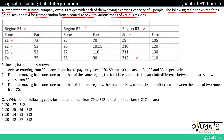The fare to go from Z0 to Z1 will be 72, and Z0 to Z2 will be 53. We have some more information given. First, any car entering from Z0 to any region has to pay entry fees of 50, 80, and 100 dollars for R1, R2, and R3 respectively. So if a car is entering from Z0 to any other region, it has to pay entry fees of 50, 80, or 100 depending on the region.